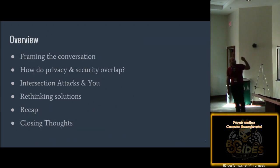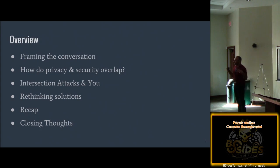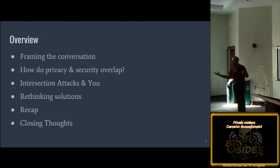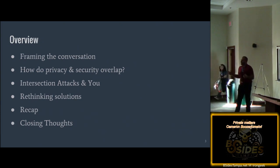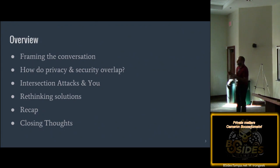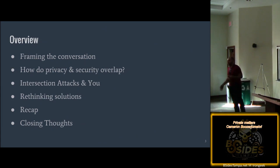Here's the overview. First, I want to frame how we think about privacy today — what laws and expectations go into how you see privacy in the modern world. Then we're going to talk about how the goals of security and privacy overlap. We'll look at what in the privacy world is called an intersection attack — how you can cross-reference data sets to enrich your information about a target. Then we're going to present some solutions, give a recap, and leave you with resources if you want to join the conversation around privacy.